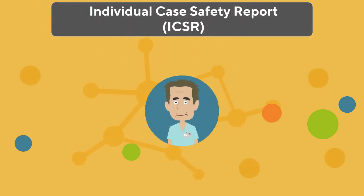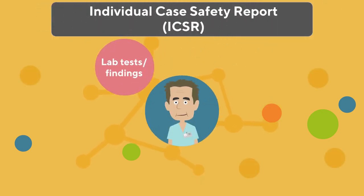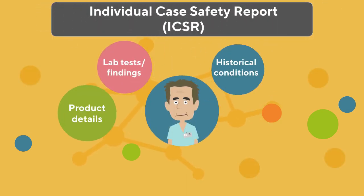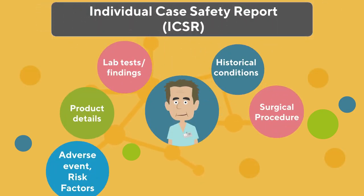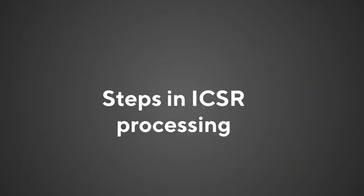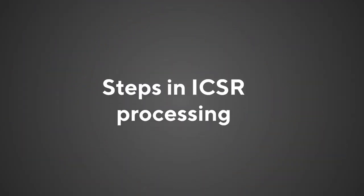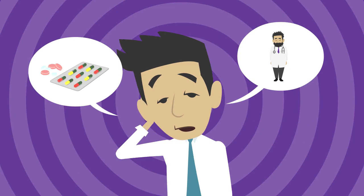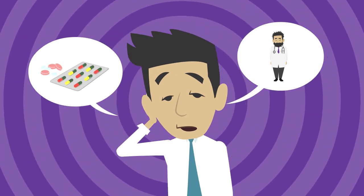As a part of the PV process, detailed patient information is documented in a safety database in the form of an Individual Case Safety Report. Let us take a look at the ICSR processing steps in detail.